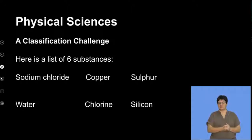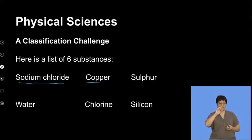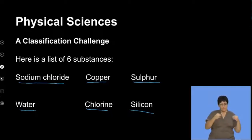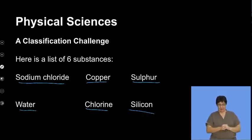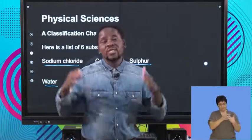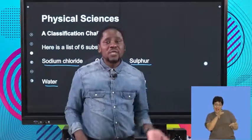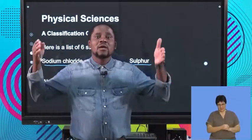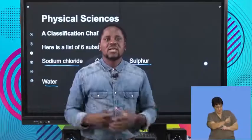Here is a list of six substances — you can think of them as materials. We've got sodium chloride, copper, sulfur, water, chlorine, and silicon. So there is a total of six substances. I'll be dropping clues along the way such that we must identify material or substance X from the six that are given. Our understanding of the physical properties will be very important in guiding us to the correct substance. Along the way, we shall be eliminating, and at the end of the day, we'll be left with the correct one.